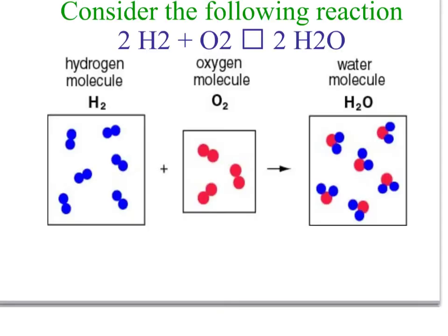First we'll review the reaction of hydrogen plus oxygen combines to form water. We'll look at the balanced reaction: two hydrogen molecules, which is diatomic, plus one oxygen molecule, which is diatomic as well, yields — the box shown should be an arrow — two molecules of water.